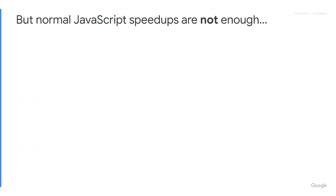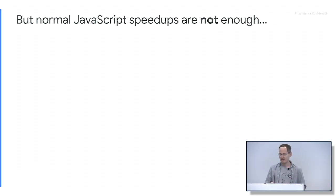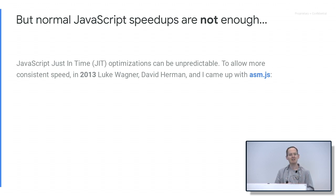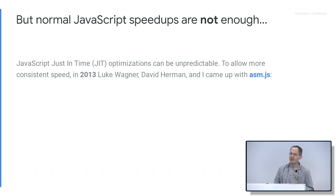Well, it turns out not everything will be great, because normal JavaScript speed is not quite enough to get to native speed. The issue is that JavaScript does just-in-time (JIT) optimizations — it's kind of unpredictable, not consistent between browser to browser or even different versions of the same browser. So in 2013, Luke Wagner, David Herman, and I made up something called asm.js, which is a subset of JavaScript.